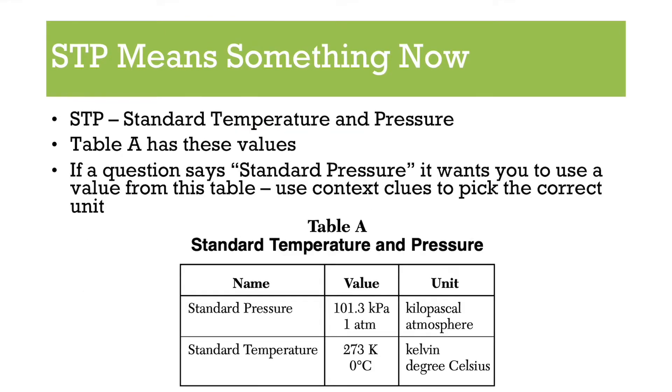So up until this point, another thing we need to mention is STP. So up to this point, if you saw STP in the question, I said, hey, don't worry about it. It means nothing until we get to gases. Well, we're in gases, it means something now. So again, STP means standard temperature and pressure. And table A has these values for you. So you don't need to remember them. But you need to remember that STP actually means different numbers, you have to remember to go check in table A. So if you see standard pressure in a question, it's talking about this. And so there are two different values you could use: 101.3 kPa, or one ATM.